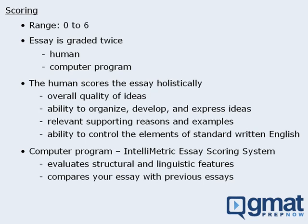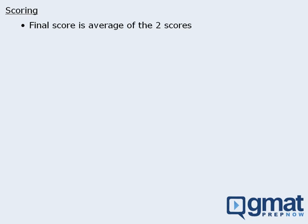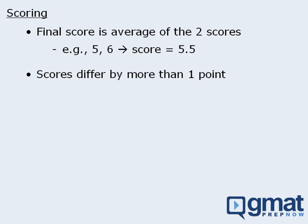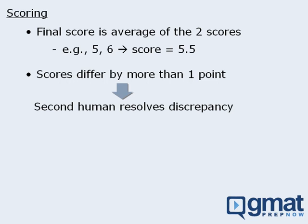Okay, so once your essay has been scored twice, your score will be the average of the two scores. For example, if your essay received scores of 5 and 6, your final AWA score would be 5.5. Now it should be mentioned that if an essay receives two scores that differ by more than one point, then a second human will read the essay to resolve the discrepancy.